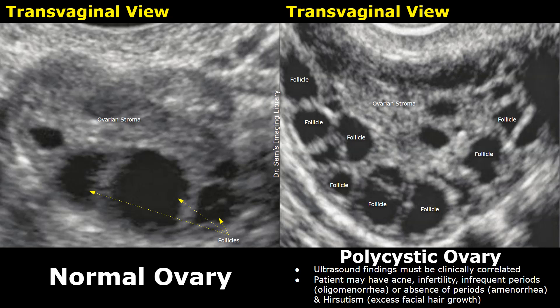Polycystic ovarian syndrome, or PCOS, is a hormonal disorder characterized by hormonal imbalance, irregular menstrual cycles, and the growth of small cysts on the ovaries. PCOS is diagnosed clinically, and ultrasound findings greatly help in diagnosis. The ultrasound findings must be clinically correlated. Patients with PCOS can present with acne, infertility, infrequent periods called oligomenorrhea, or absence of periods which is amenorrhea.